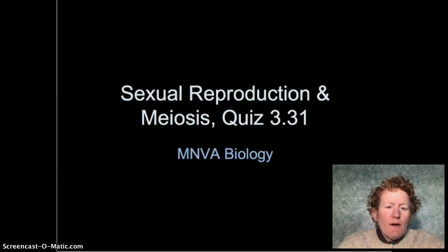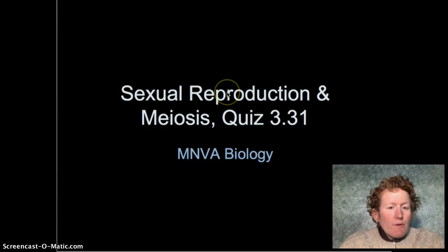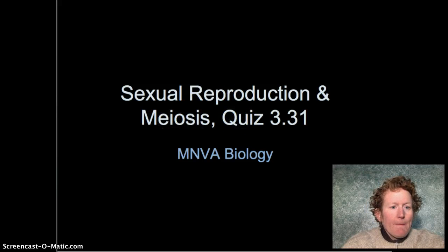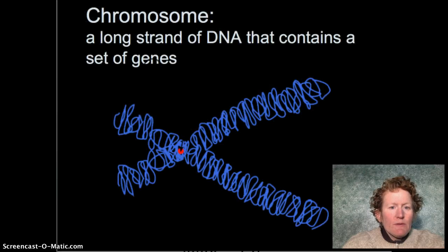Hello biologists. We are going to do the review for sexual reproduction in meiosis, which is quiz 3.31. First, let's talk about chromosomes.